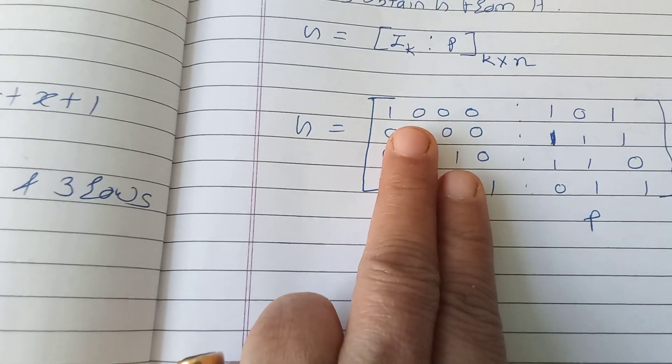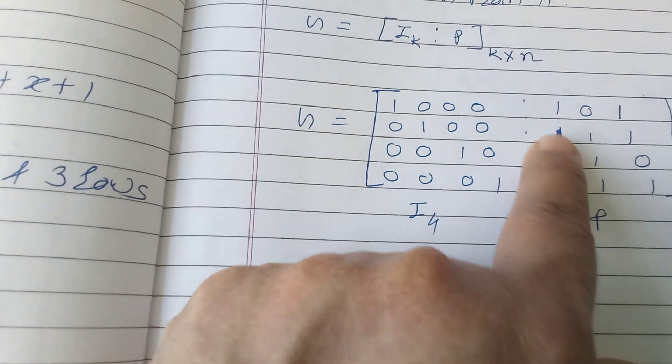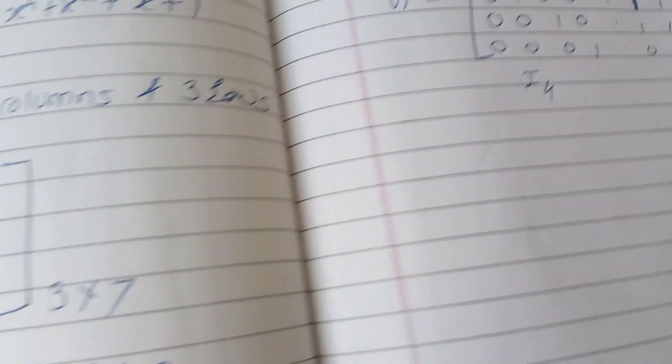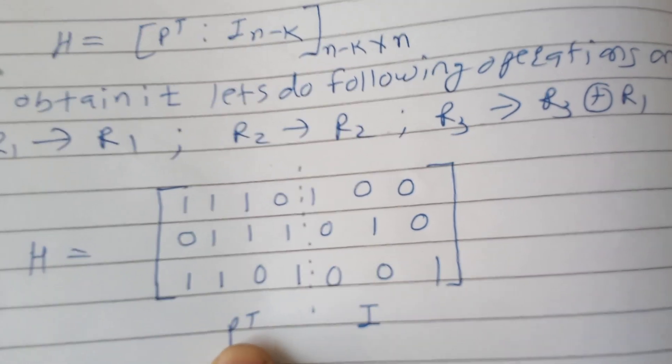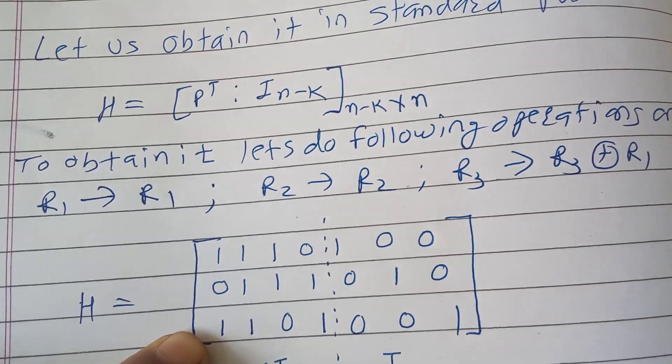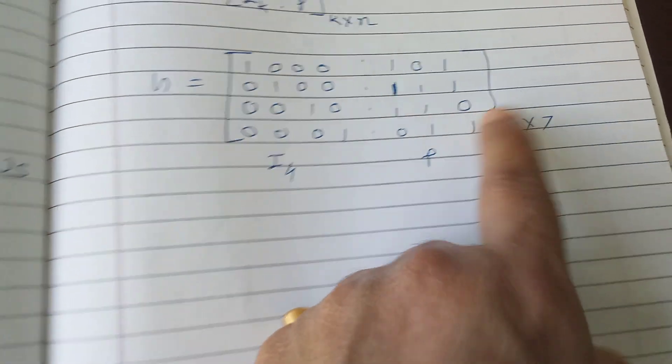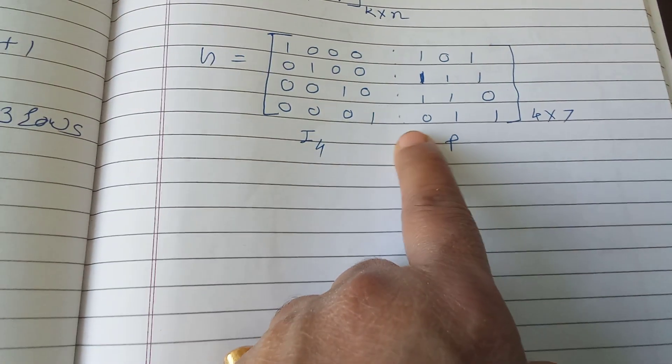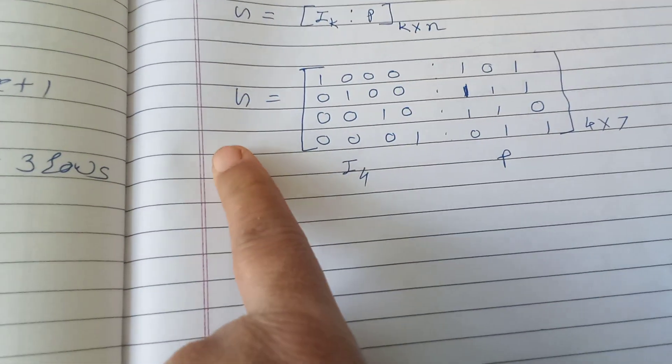You have to write down 4 by 4 identity matrix. So you got here 4 rows and 4 columns, remaining are 3 columns you have to find. So 3 columns will be - you have to observe here Pᵀ. That means you have to make this [1,0,1] as the first row of generator matrix: 1, 0, 1. Then this column [1,1,1] as the second row, [1,1,0] as the third row, and fourth column [0,1,1] as the fourth row.